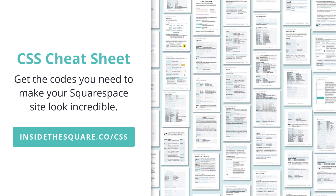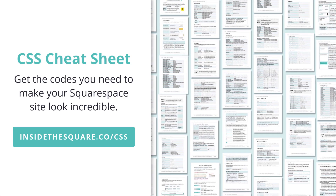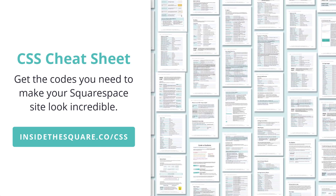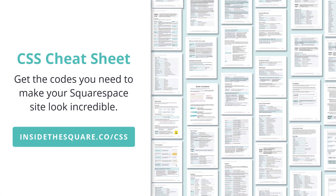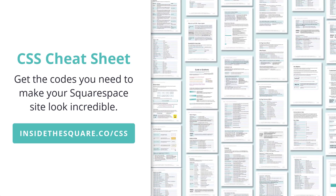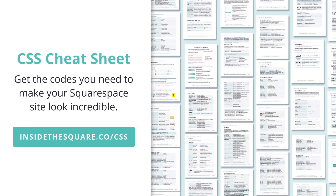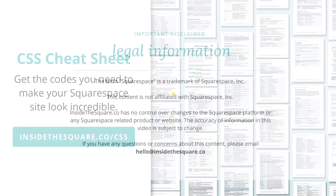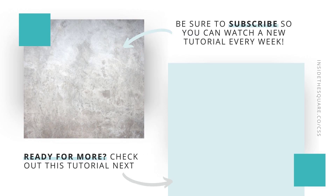If you liked this tutorial, you'll love my CSS cheat sheet. With over 30 pages of pro tips and code snippets specific for Squarespace, you can customize your site way beyond your design menu. Download your copy today at insidethesquare.co/CSS. And I'll see you next time.